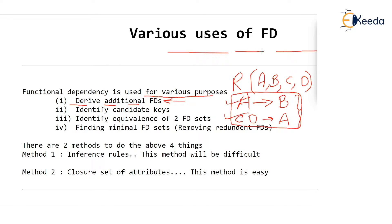Why do we need additional functional dependencies will be seen later. But given this FD set — this set contains two functional dependencies — we want to find out if any more additional dependencies can be found. That is one of the uses of FDs.